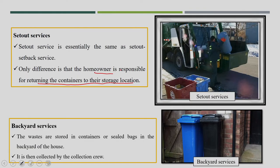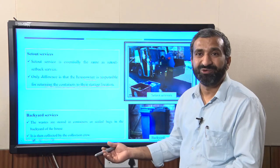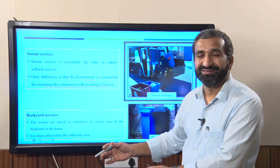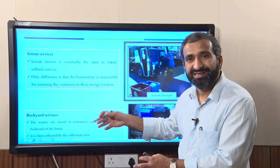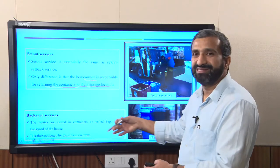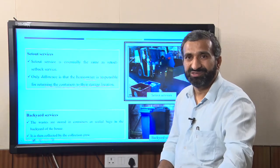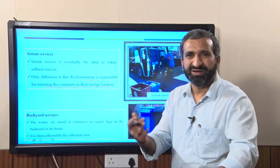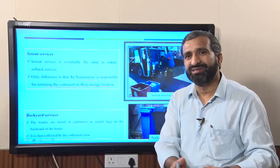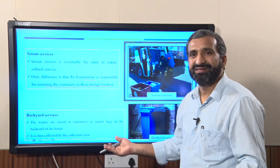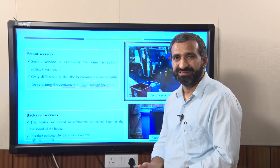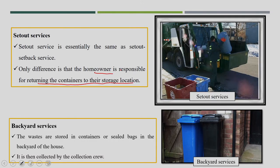Backyard service is also not well known in India because many apartments are coming up and it is difficult to find single homes or backyard roads. In backyard service, dustbins are placed at the backside of the house where a small road exists, and waste is collected there rather than at the front of the house by vehicles. This avoids traffic issues and is well known in European and American countries.